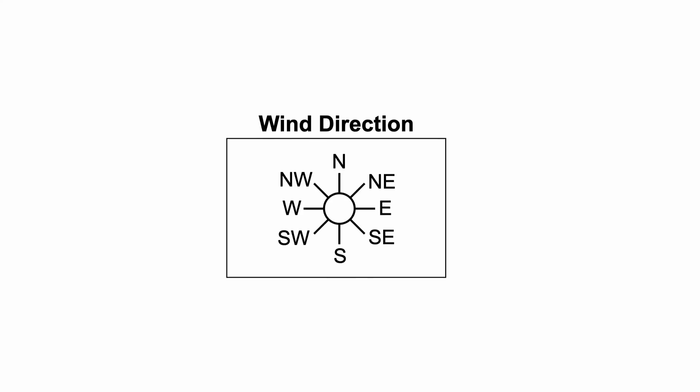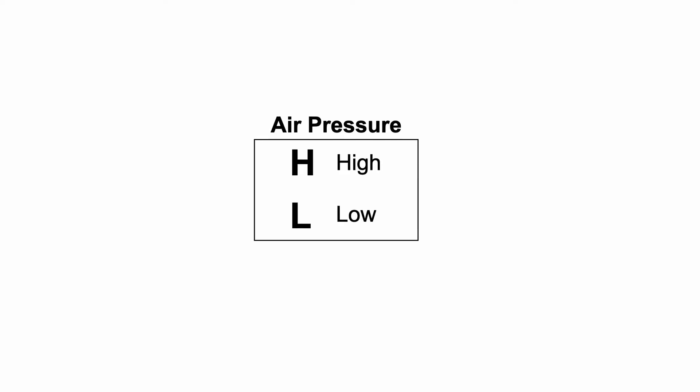Beneath the wind direction section, we have something that's not on the station model itself — a symbol for air pressure on a weather map. If you've ever seen a giant H or L on a weather map, they represent air pressure bodies. An H is a high-pressure area, which typically brings better, clearer, nicer weather. An L is a low-pressure area, which typically brings worse weather — stormy, rainy, snowy, etc.